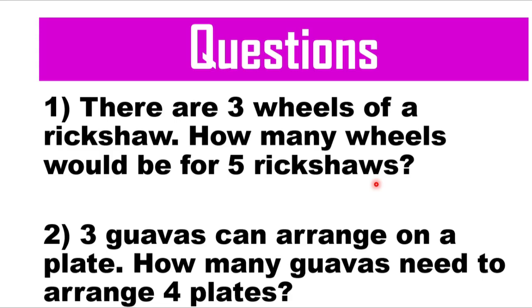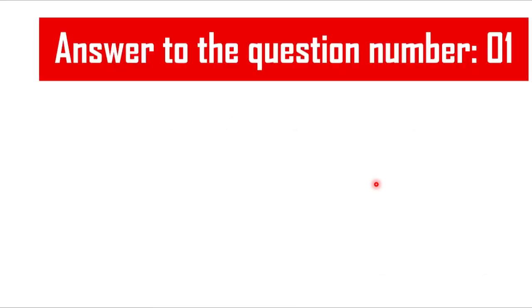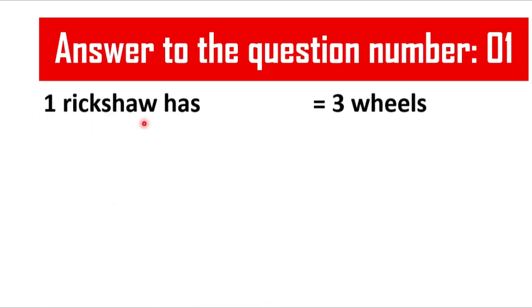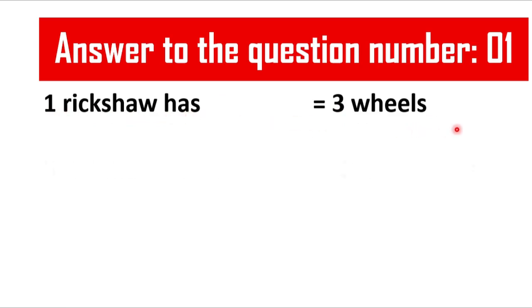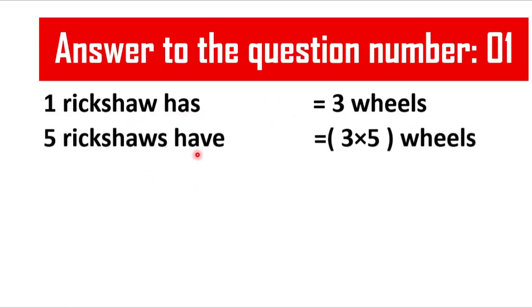Now we will try to solve question number one. In the answer of question number one, in the first line you should write: 'One rickshaw has three wheels.' And in the next line you should write: 'Five rickshaws have three into five wheels.'